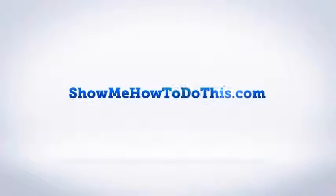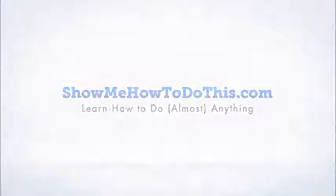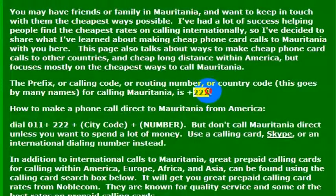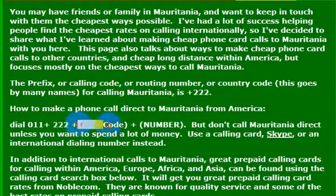To place a phone call to Mauritania, you want to know the international code for the country, which is 222. If you are calling directly from a landline or an internationally enabled phone in the United States, you would dial 011, then the country code 222, and then the phone number that you want to call.